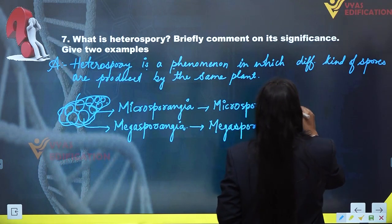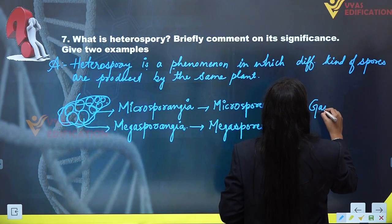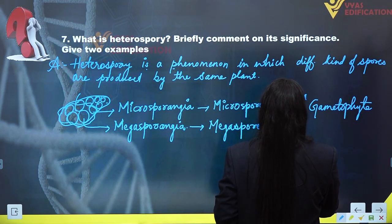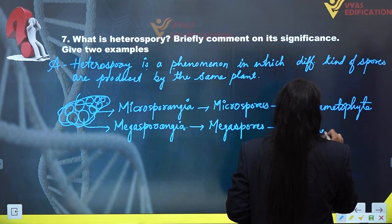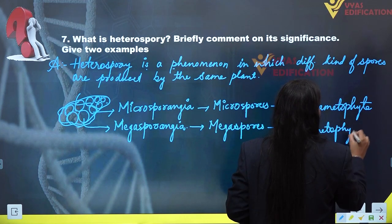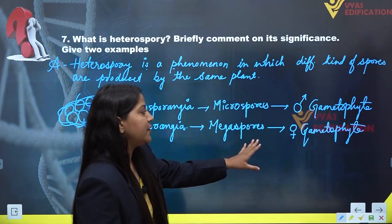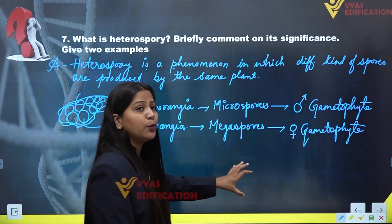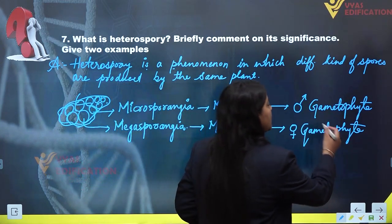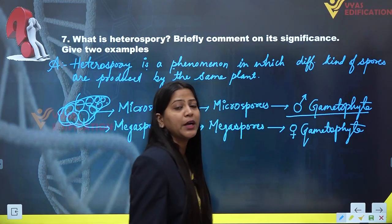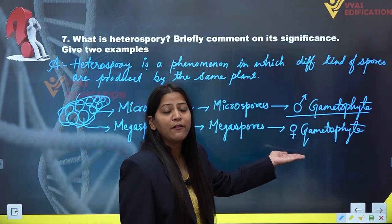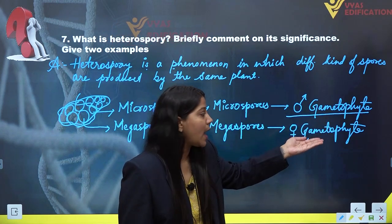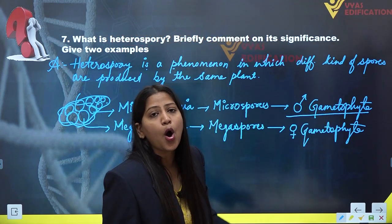Microspores give rise to the male gametophyte and megaspores give rise to the female gametophyte. These male and female gametophytes develop their respective reproductive structures. The male gametophyte develops anthridium and the female gametophyte develops archegonium. Inside anthridium, male gametes or antherozoids are formed, and inside archegonium, the egg cell or female gamete is formed.